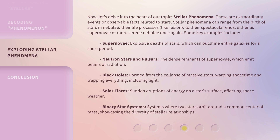Some key examples include: Supernovae — explosive deaths of stars, which can outshine entire galaxies for a short period. Neutron stars and pulsars — the dense remnants of supernovae, which emit beams of radiation. Black holes — formed from the collapse of massive stars, warping spacetime and trapping everything, including light. Solar flares — sudden eruptions of energy on a star's surface, affecting space weather. Binary star systems — systems where two stars orbit around a common center of mass, showcasing the diversity of stellar relationships.